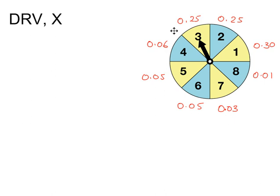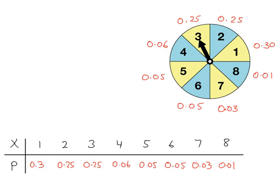These probabilities and the values that X can take can be represented in a probability table like this. So you have X, the outcome, and you have P, the probability that each outcome has.